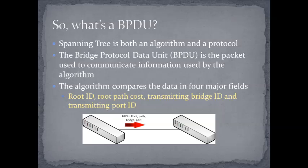There are four major fields that we care about in a spanning tree message. There's a lot more to a BPDU than just four fields, but these are the big ones: the root ID, the root path cost, the transmitting bridge ID (or just the bridge ID), and the transmitting port ID (or just the port ID).